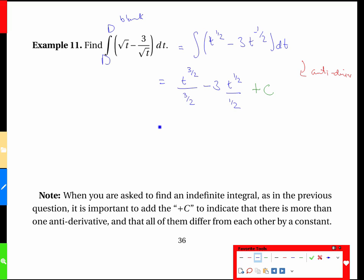And I think it behooves us to tidy this a little bit. Over 3 halves is like multiplying by 2 thirds, dividing by a half is like multiplying by 2, and we could write it like that if we liked, plus the C.